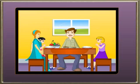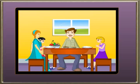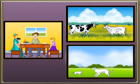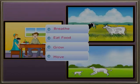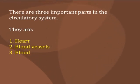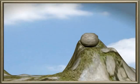Here you see a family — a man with his wife and children, and animals with their young ones. They all have some things in common: they breathe, eat food, grow and move from place to place. These characteristics can only be seen in living organisms. Can you see this rock? It doesn't breathe, eat food or move from place to place. Therefore, it is a non-living organism.